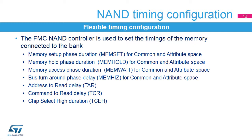Otherwise, only common space is needed. Four parameters are used to define the number of HCLK cycles for the different phases of any NAND Flash access: setup time, hold time, wait time, and data bus high-Z time. Three additional parameters are used to control the timings for the address-to-read delay, the command-to-read delay, and the minimum chip select high duration.